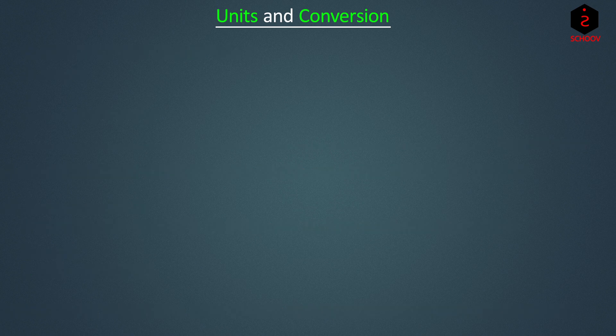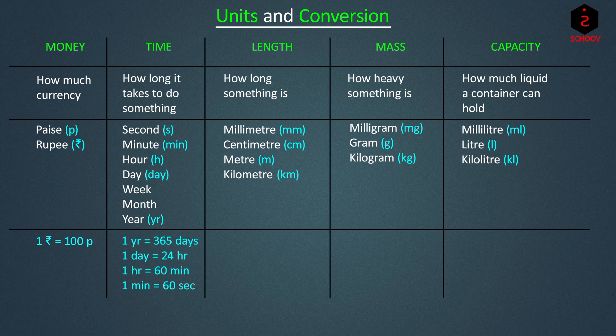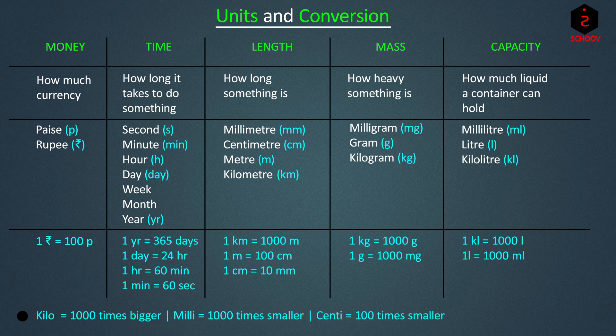Now, let's see conversion of different units. In this table, units are written from smaller to bigger. 1 rupee equals 100 paise. 1 year equals 365 days. 1 day equals 24 hours. 1 hour equals 60 minutes. 1 minute equals 60 seconds. Similarly, we can see conversion for length, mass and capacity. Remember, kilo means 1000 times bigger, milli means 1000 times smaller, and centi means 100 times smaller.